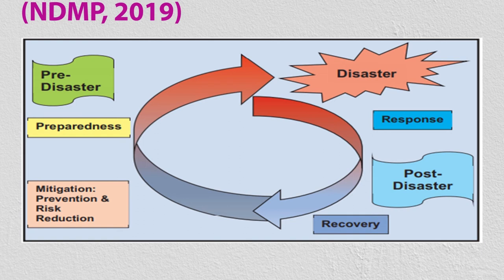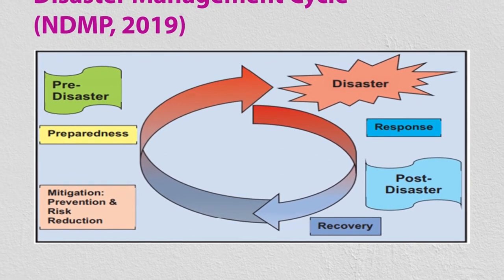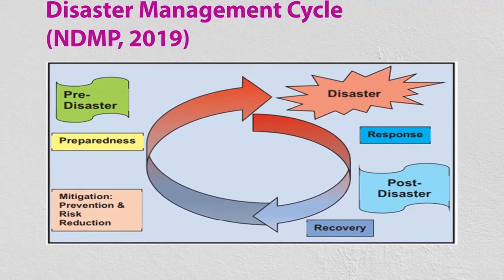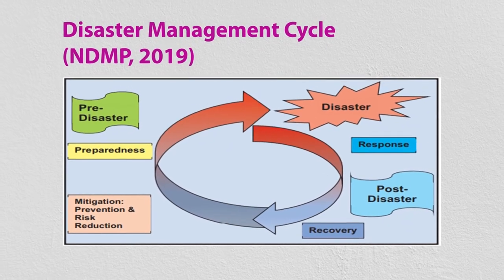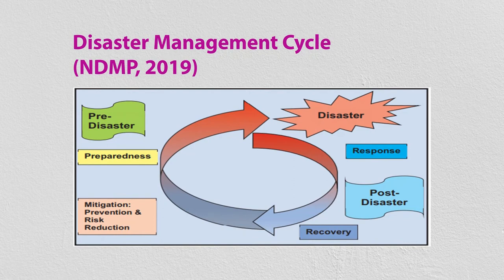Then during the disaster, we need to respond. For example, if there is a sudden flash flood — how do we deal with that situation? How do we rescue people, rescue animal life, save property? All this comes under response to the disaster. Post-disaster is the recovery — how to bring the situation back to normal, what steps need to be taken to bring life back to its original path after the disaster. So disaster management has all three dimensions: pre-disaster preparedness, during-disaster response, and post-disaster recovery.